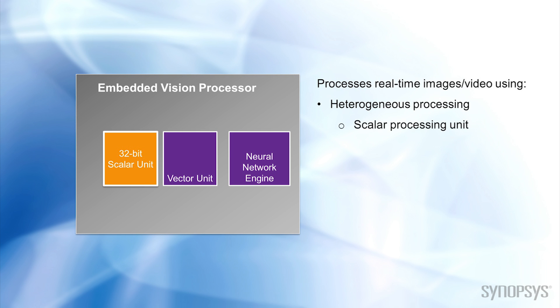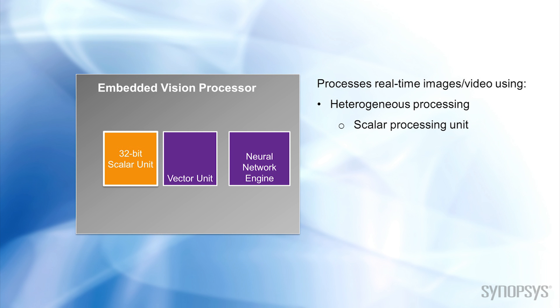Embedded vision processors typically include a 32-bit scalar unit that can handle decision-making and control tasks. These could include tasks like high-level analysis, interacting with a host processor, image stabilization, and motion tracking.